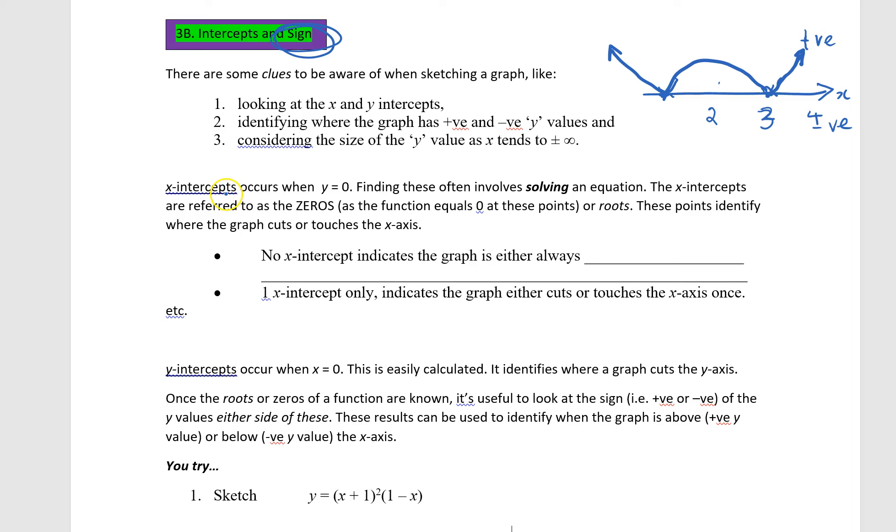You know about the x-intercepts, and they occur when y is 0, and we solve an equation. They're sometimes referred to as zeros, which really makes sense to me, because I'm looking for where the function in x, which is y, is equal to 0. I'm looking for where the function is 0. And the x values that make the function 0, it stands to reason that they might be referred to as zeros. They're sometimes referred to as roots.